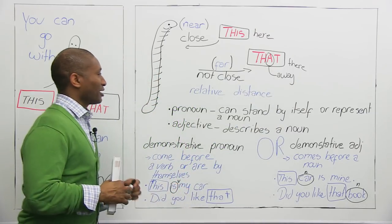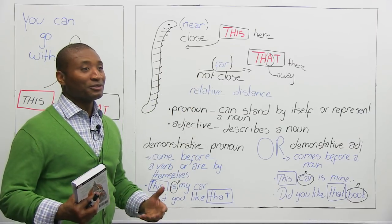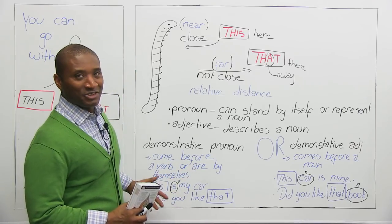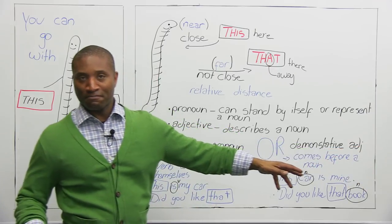All right. I thought you'd like that. It's considered relative distance. Relative meaning there's no real distance. I can say I like this marker, but it's not near to me, but it's closer than the marker that's over there. Okay? All right. Good.